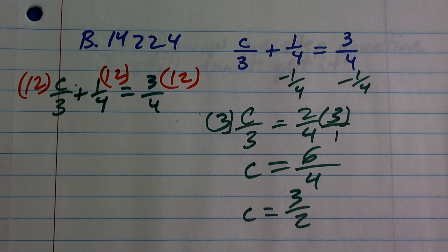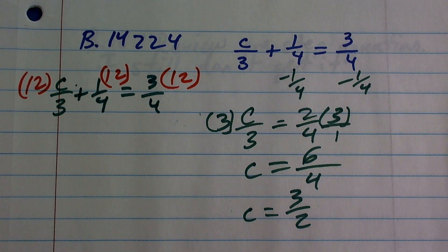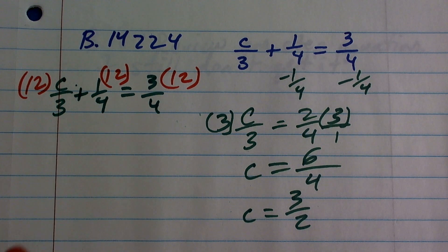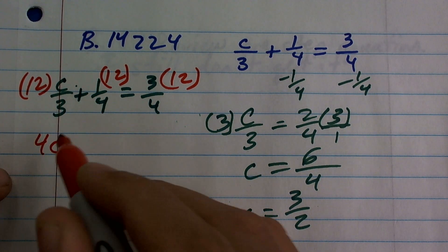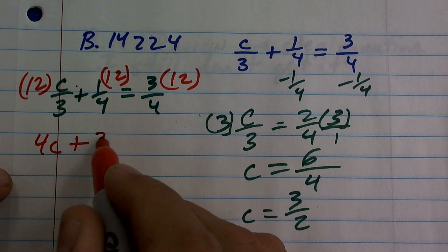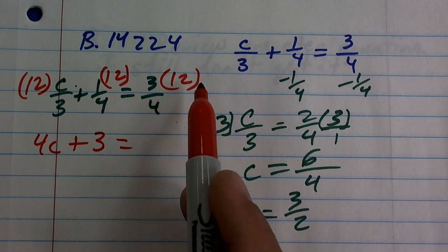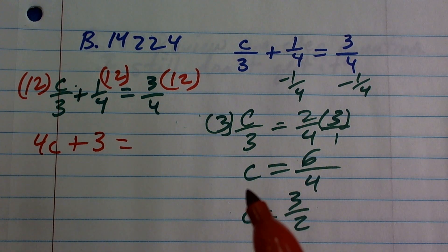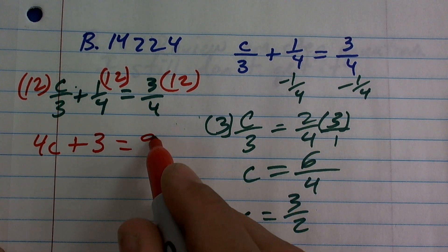So, if you multiply everything by 12, now, let's just simplify it. 12 times c over 3, 12 times c is 12c, divided by 3 is now going to be 4c, and then 12 times 1 fourth is going to be positive 3, and then 12 equals 3 times 12, and then divided by 4, which is going to equal 9.